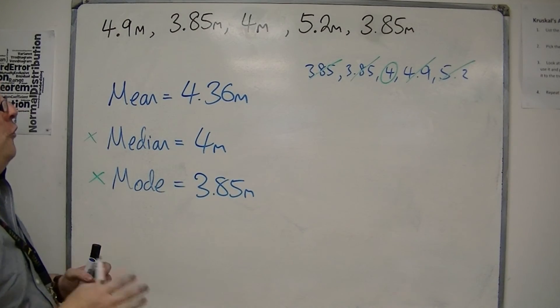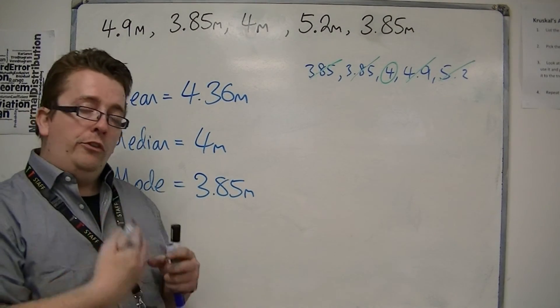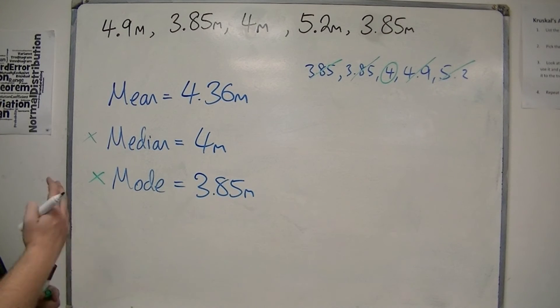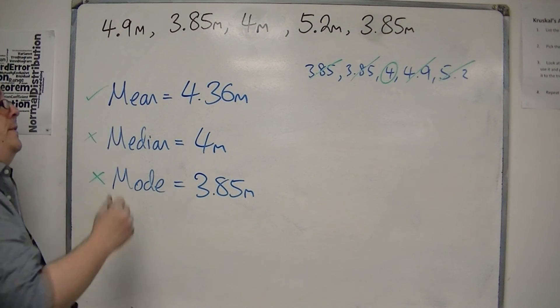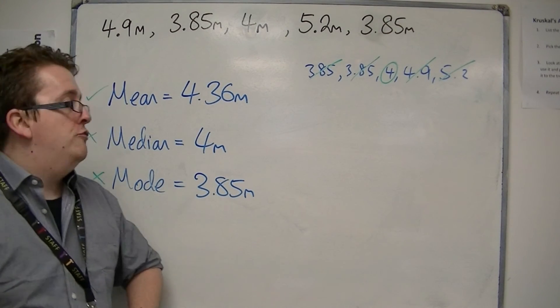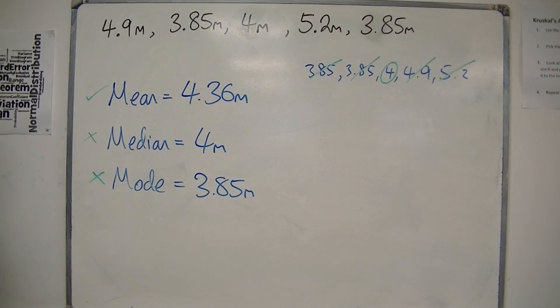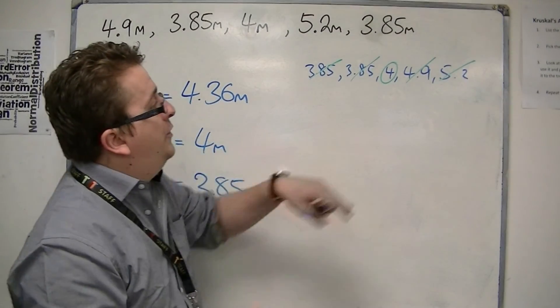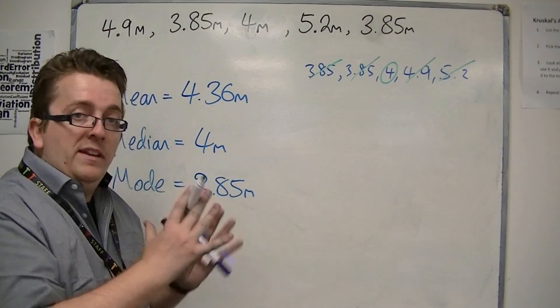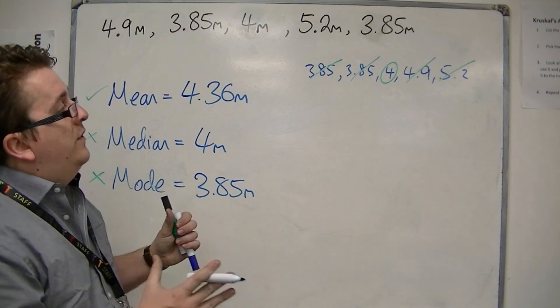Really, the mean at 4.36, because we're working with continuous data, the mean is much more appropriate as a measure of average. And 4.36 feels to be best as a middling number between these five.